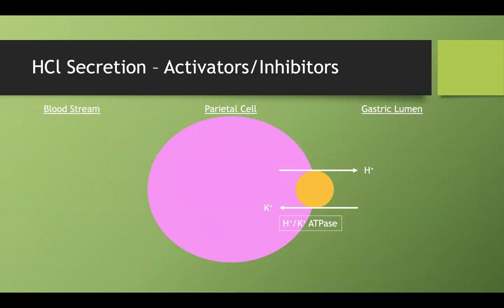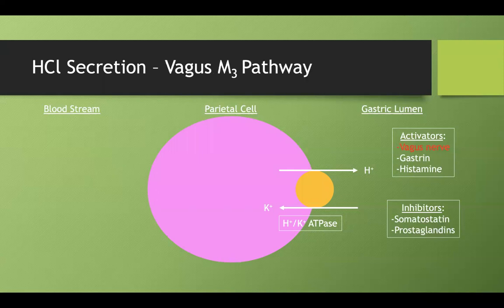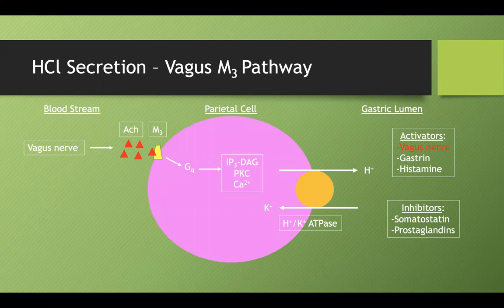That's only a very small percentage of how this works. Let's go through what activates this process and what stops it — our activators and inhibitors. Starting with the vagus nerve M3 pathway: the vagus nerve secretes acetylcholine, which binds to an M3 receptor, similar to what we saw in the oral cavity lecture. The M3 receptor activates a GQ pathway, which drives the IP3/DAG pathway, protein kinase C, and calcium — all of which ultimately activate the H+/K+ ATPase.